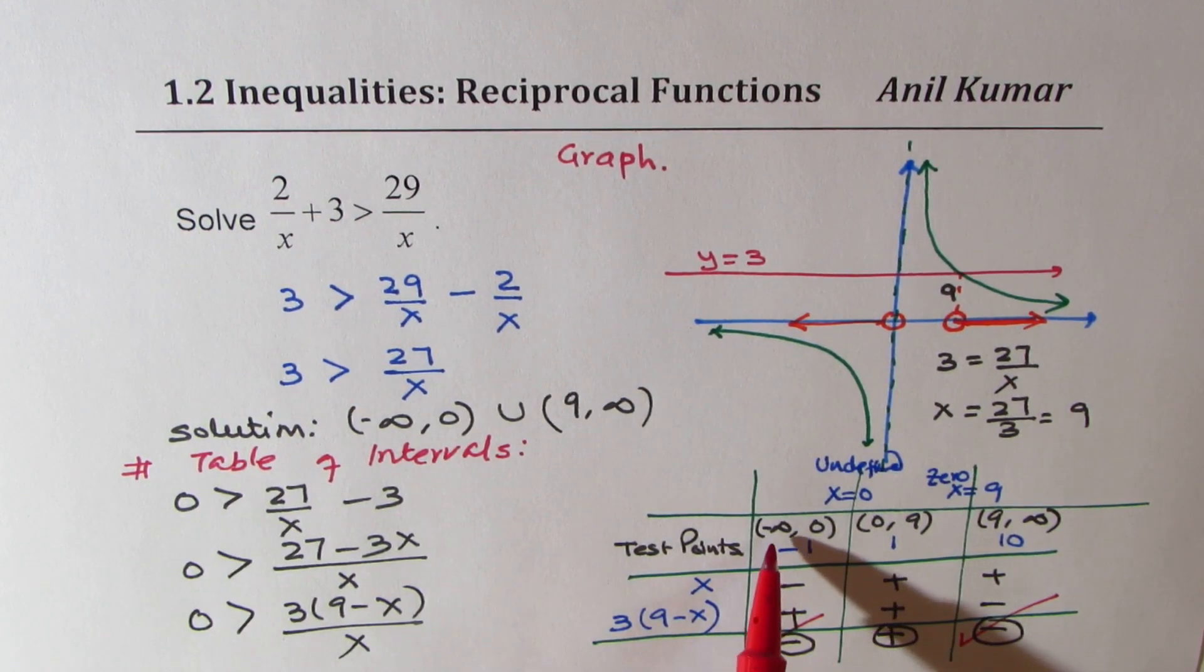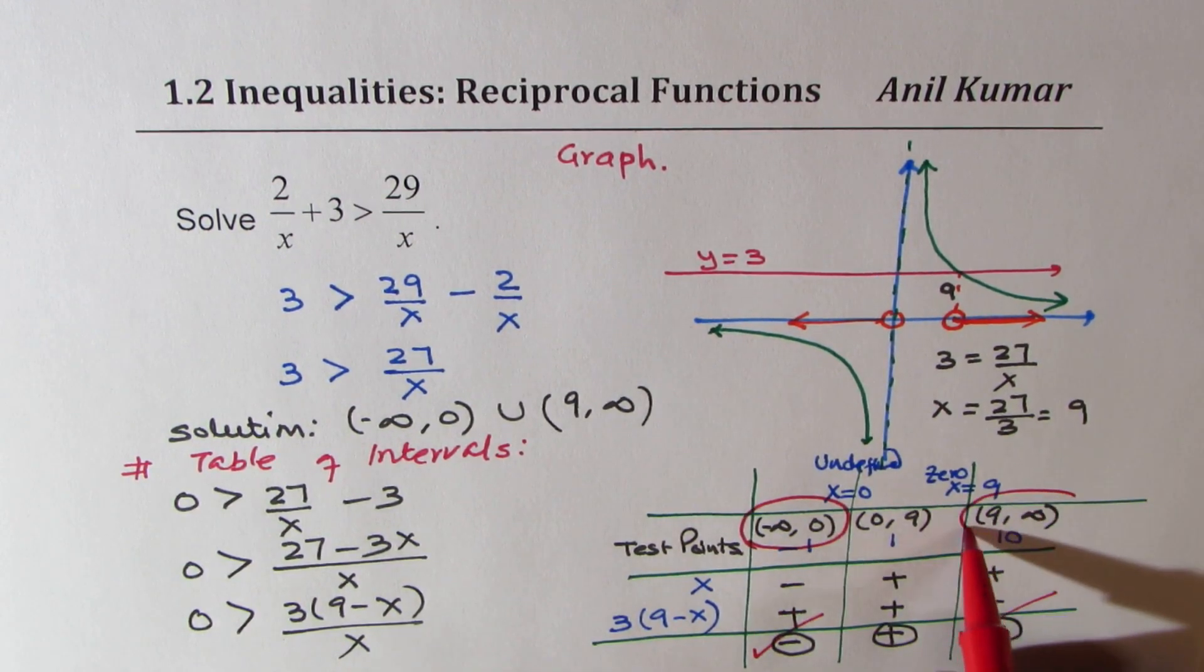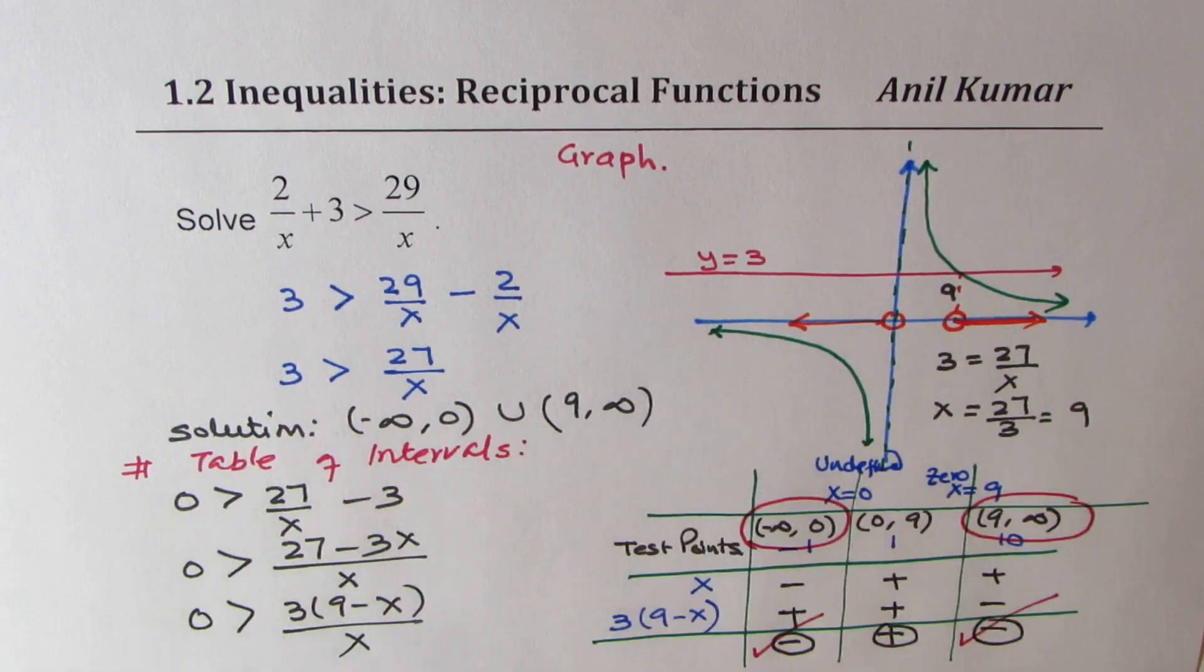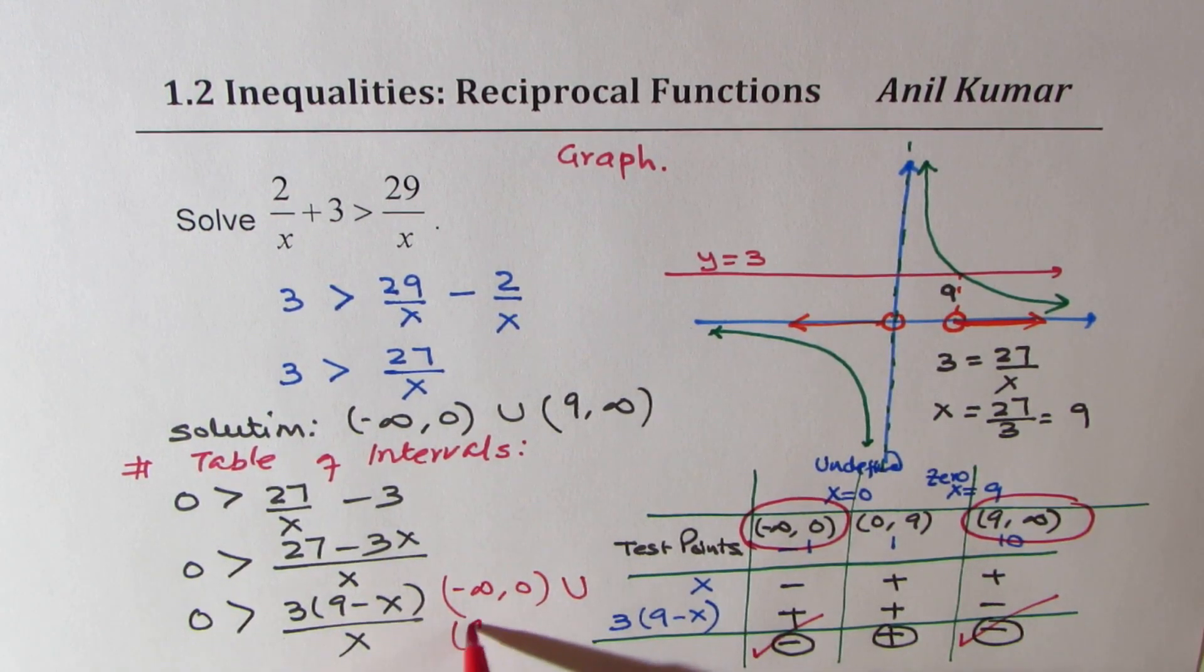When we say 0 is greater than this, we are looking for a solution where the rational function is negative, which is these intervals. So these intervals are from minus infinity to 0 and from 9 to infinity, just as we saw earlier. We get exactly the same solution from this table.